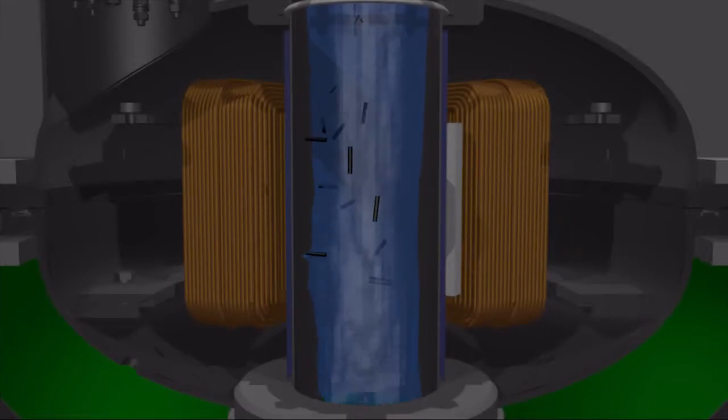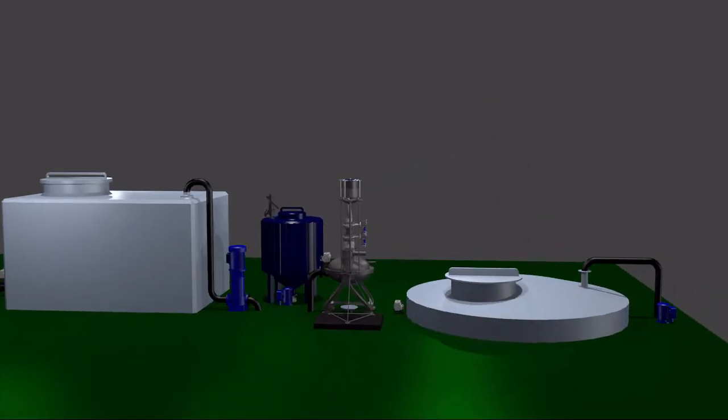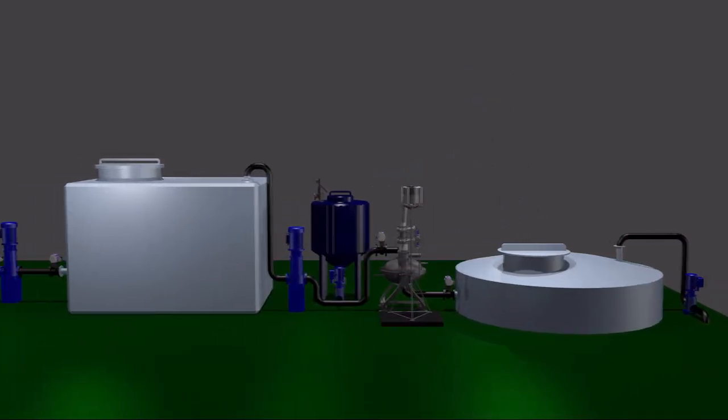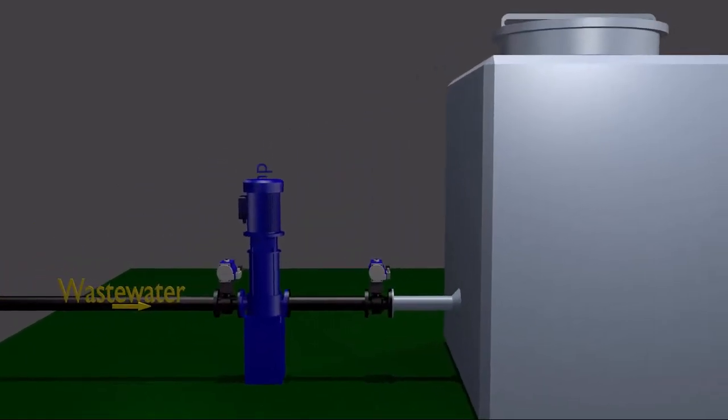Using the AVS for wastewater decontamination reduces the consumption of reagents and power, decreases equipment footprint, and improves the quality of the decontamination process. The process in the AVS mill occurs in one stage.